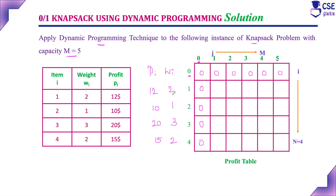Now consider the weight of the first object, which is 2. When the remaining capacity j equals 1, it is not possible to include the first object since its weight is 2 but capacity is only 1. We cannot include this object when remaining capacity is 1. This object can be included when capacity is equal to or greater than 2. So when j equals 2, we can include this item and the profit earned is 12. When j equals 3, 4, or 5, only this one item is available, so we include it and profit is 12.